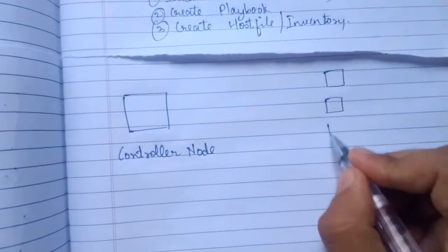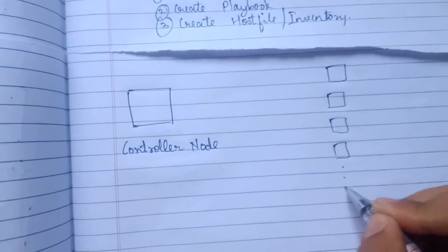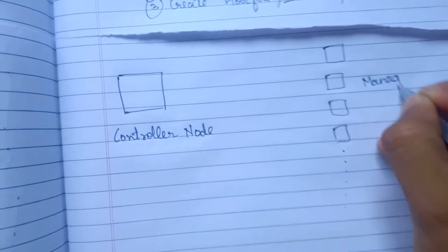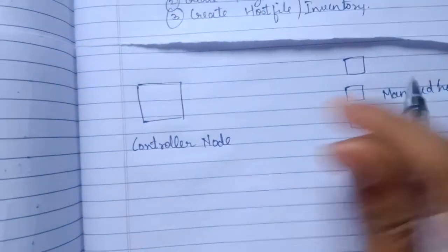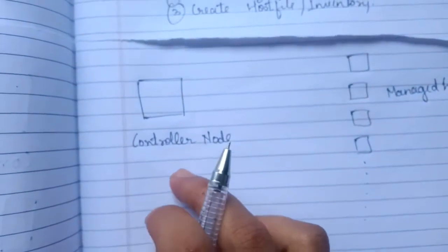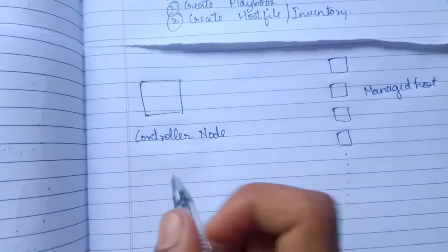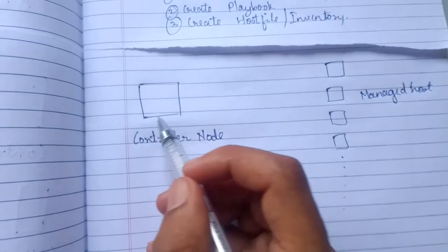This server is going to configure all the other servers and this can be anything and they are called as managed host. You're going to install Ansible on this controller node and this controller node has to be Linux. You cannot install Ansible on Windows, so this has to be a Linux instance or Linux server.